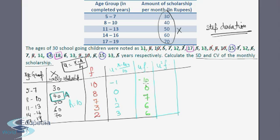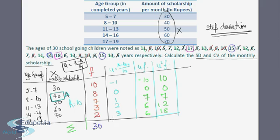Now summing up the columns: the sum of frequencies n = 10 + 8 + 7 + 3 + 2 = 30. For Σ(f·u): 6 + 6 = 12, plus 7 = 19, minus 10 = 9, so Σ(f·u) = 9. For Σ(f·u²): 10 + 0 + 7 = 17, plus 12 = 29, plus 18 = 47, so Σ(f·u²) = 47.